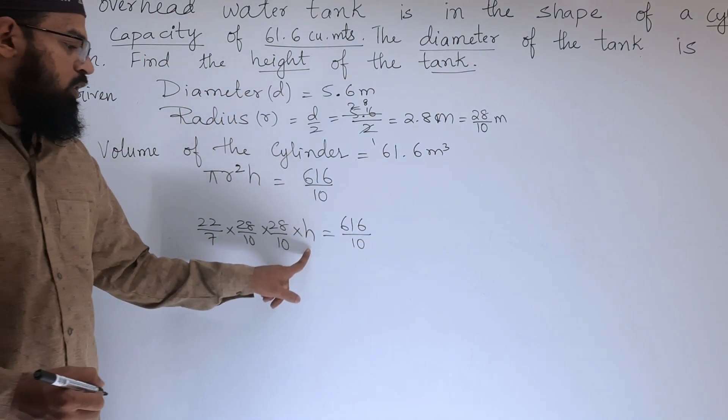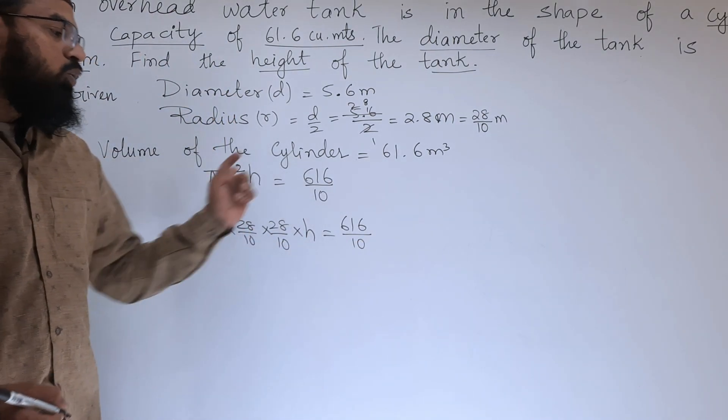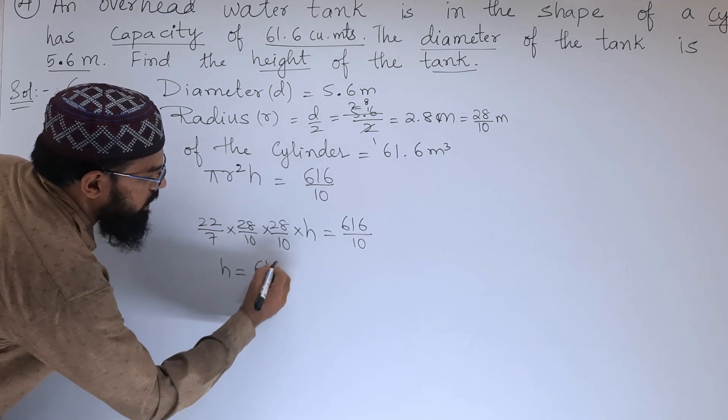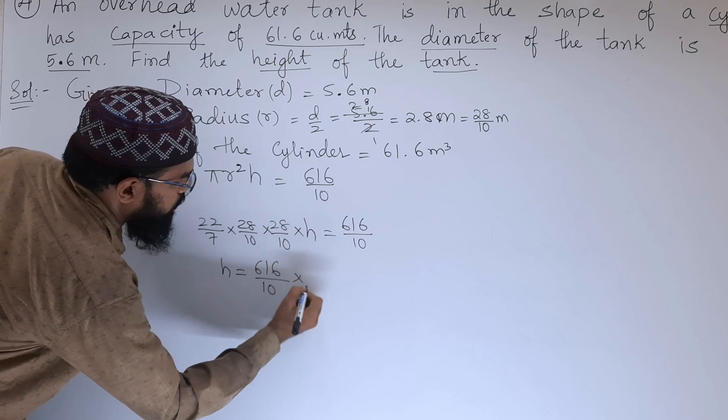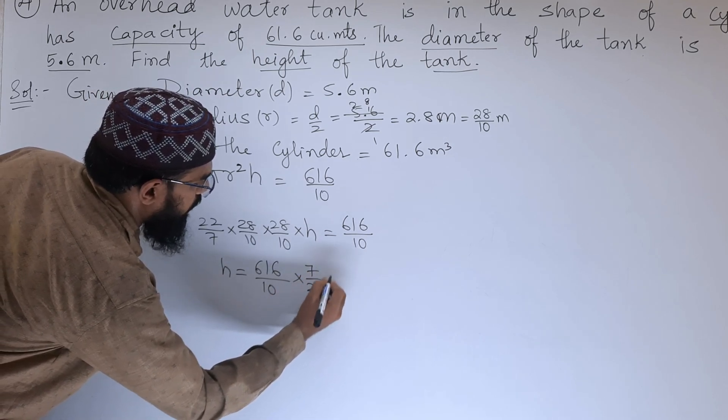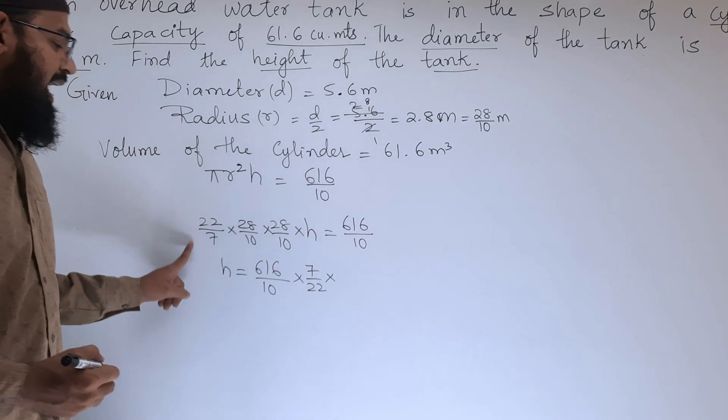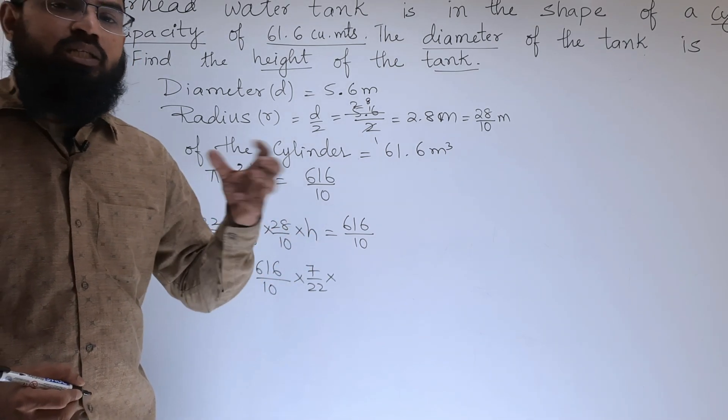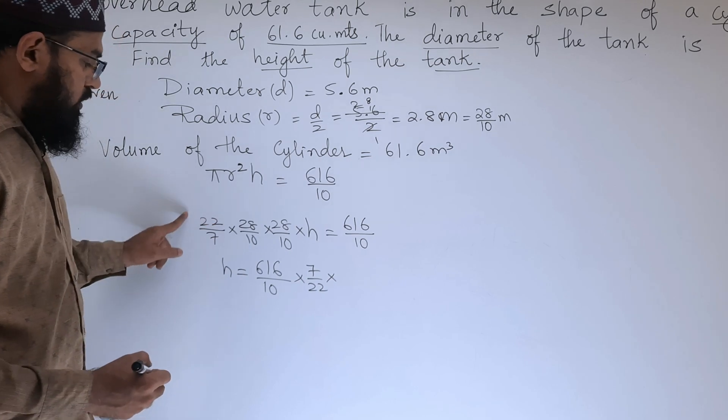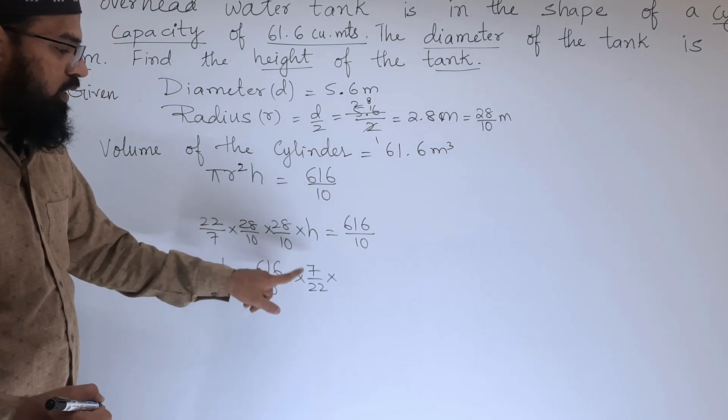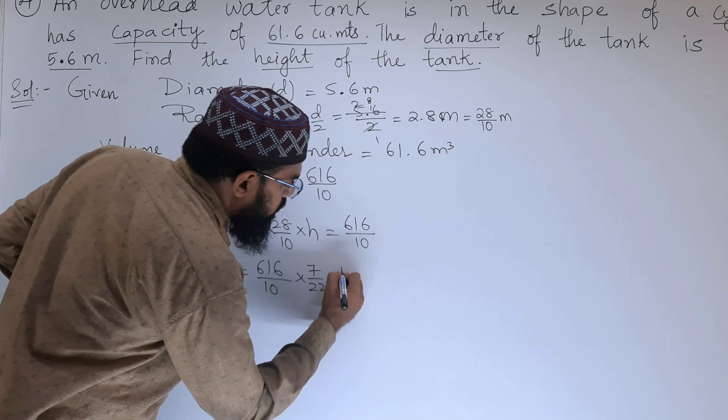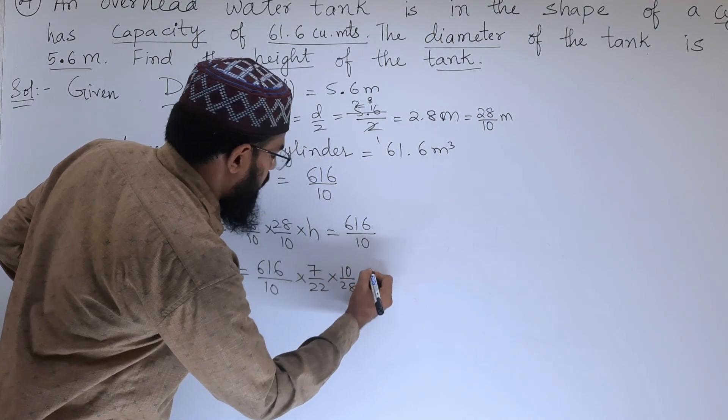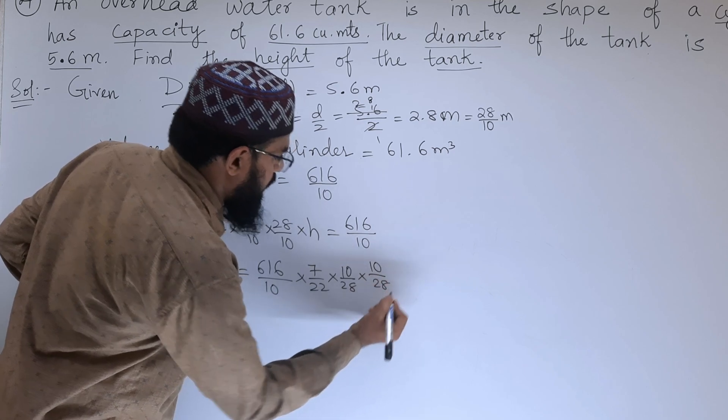Except h, we will send everything to that side. So it will become h equals 616 by 10 into 7 by 22. As we are sending these things to that side, this will become the reciprocal. It will interchange like 22 by 7 will be 7 by 22, 28 by 10 becomes 10 by 28, 10 by 28.